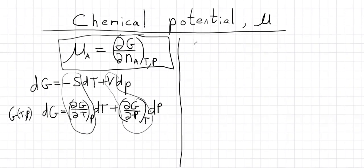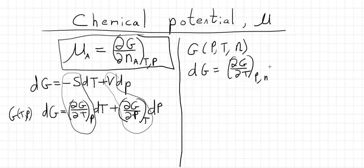So in that case, we have to write G as a function of pressure, temperature, and moles. And so we can say dG is going to be, and at first it looks the same, right? We have the change in Gibbs function with temperature, we have the change in Gibbs function with pressure.